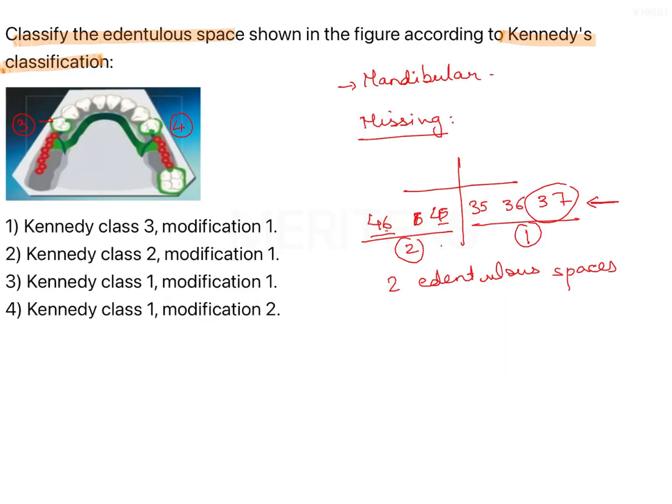In the question, this side is class 3 and this side is class 2. So which one should you go for? You have to see the posterior most edentulous area. Posterior most would be class 2. This is according to rule number 5, according to Applegate.